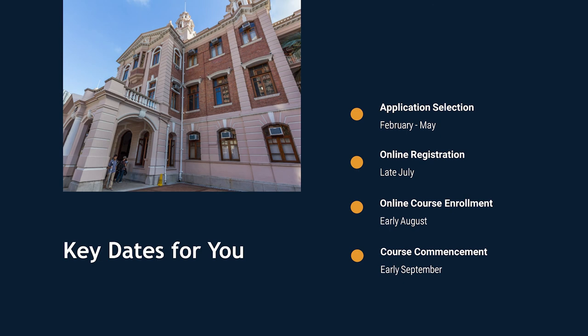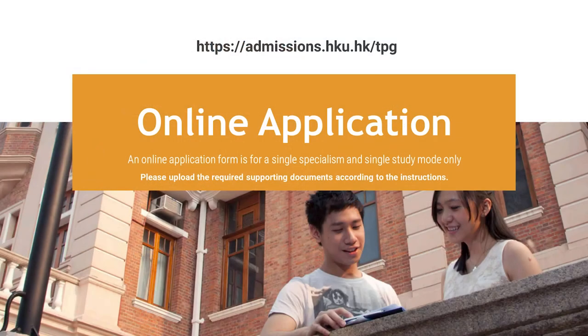Regarding the timeline, application selection is between February and May, online registration is in late July, online course enrollment in early August, and course commencement in early September. You can find the web link for online applications in front of you. An online application form is for a single specialism and single study mode only. You need to upload the required supporting documents according to the instructions, which may vary according to the course you are interested in.